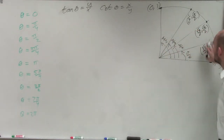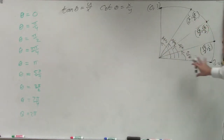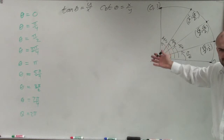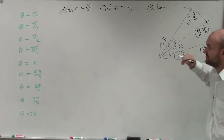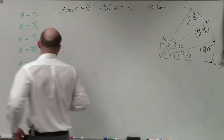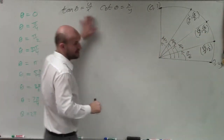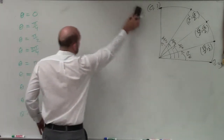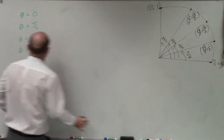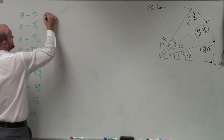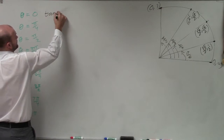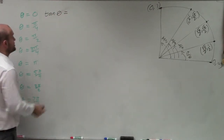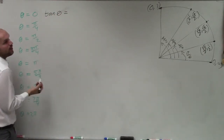I understand that I didn't do the whole unit circle, but we don't need to know the whole unit circle to evaluate for these. So now let's evaluate for the cotangent and tangent of theta. For the tangent of theta, that is just y over x.